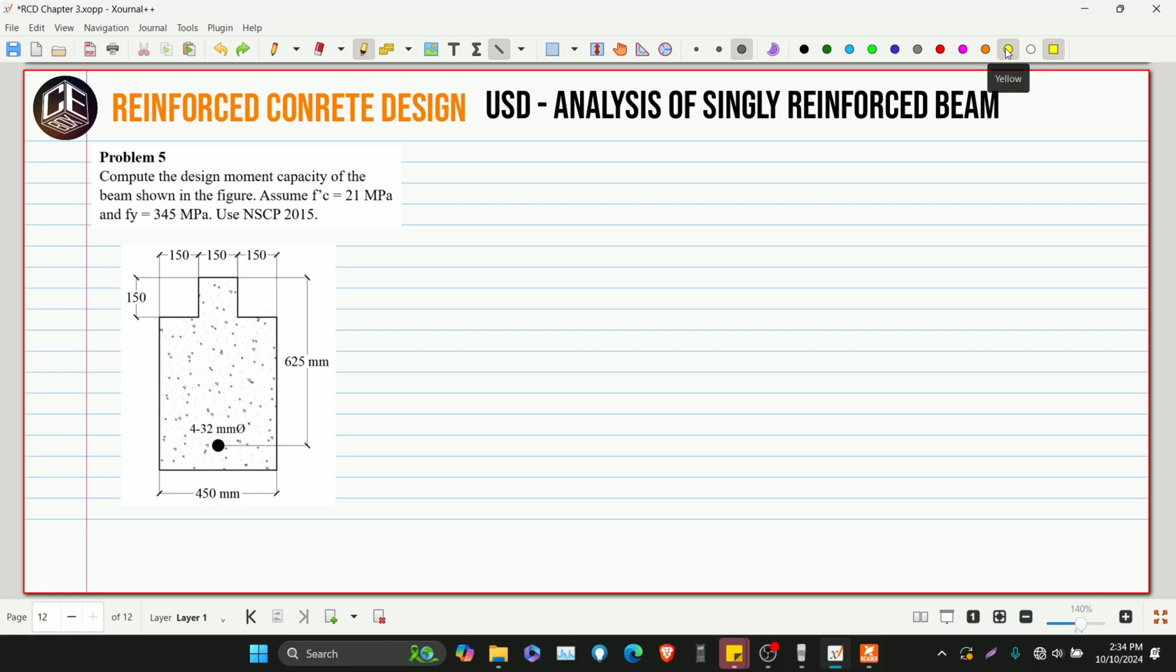This is our problem number 5 for reinforced concrete design, analysis of singly reinforced beam under ultimate strength design. Compute the design moment capacity of the beam shown in the figure. Assume F'c as 21 MPa and FY as 345 MPa.